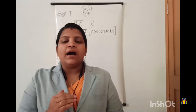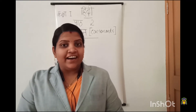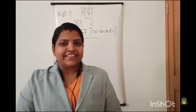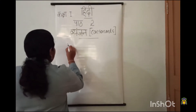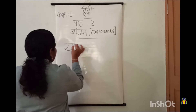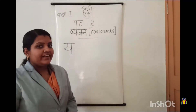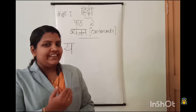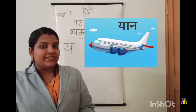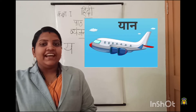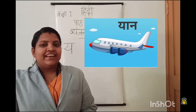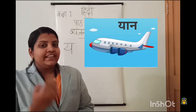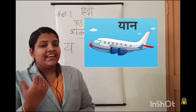So, after 'ma', the coming letter is 'ya'. Say with me louder: ya. One more time: ya. So let me write the letter. This is letter ya — say louder: ya. Next we will learn a word starting with letter ya. What is this? Yes, it is 'yaan'. And which is the first letter of 'yaan'? Yes, of course: ya. So ya say yaan.